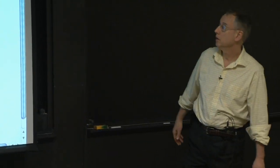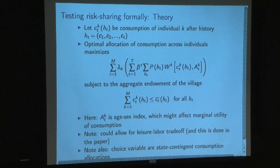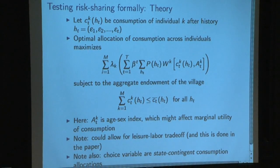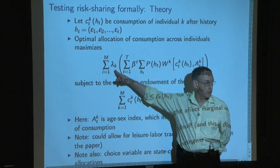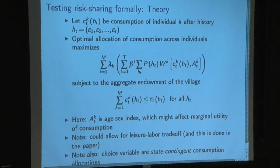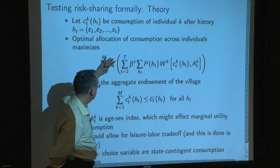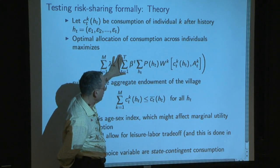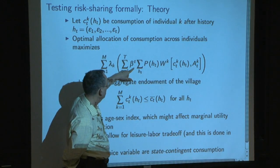Here's the optimization problem. There's a one-to-one relationship between all the Pareto optimal allocations in this economy and solutions to this programming problem. The Pareto weights are lambda sub k, different for different households k. It's a weighted average — lambda Pareto weighted average — of the discounted expected utility of household k. It's over time, discounted at a common rate, with equal probability over states of the world.